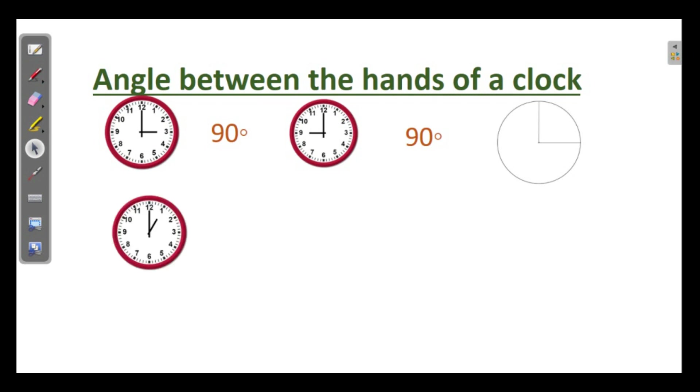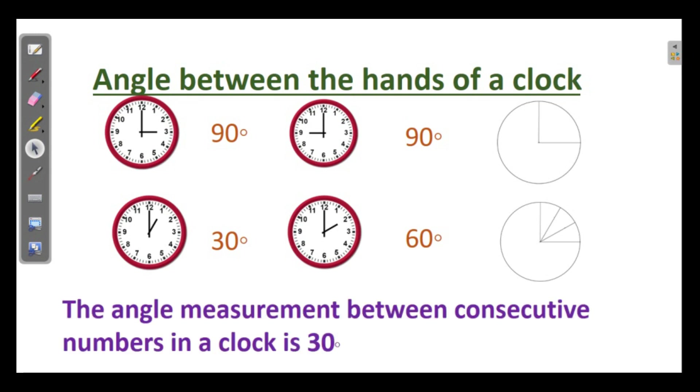At 1 o'clock this 90 degrees is divided into 3 equal parts, that is each part is 30 degrees. So here the angle is 30 degrees. At 2 o'clock, 30 plus 30 or 2 into 30, that angle is 60 degrees. Learn the angle measurement between consecutive numbers in a clock is 30 degrees.